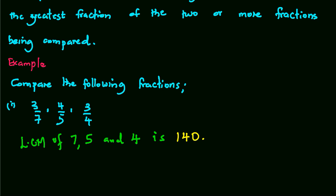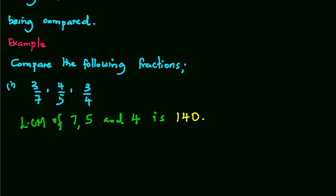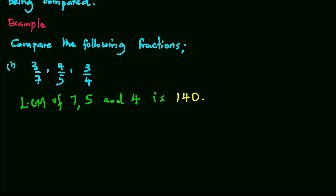So we need to find what factor we should multiply 7 to get 140, 5 to get 140, and 4 to get 140. In the first case, we have 3 over 7 times 20 times 20, which gives us 60 over 140.